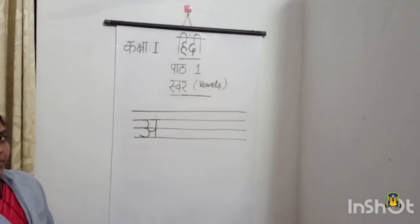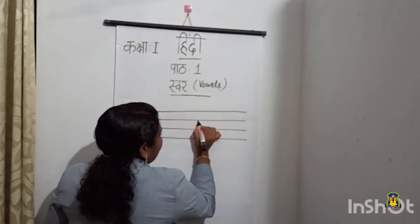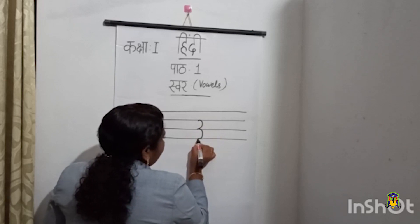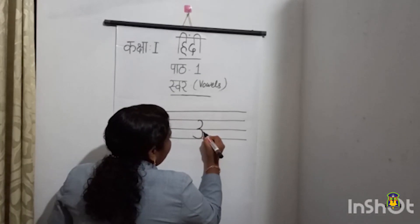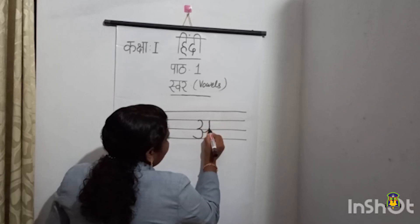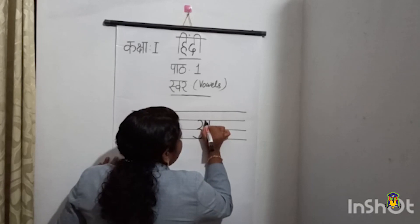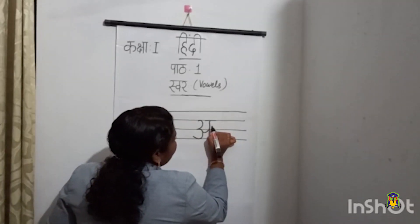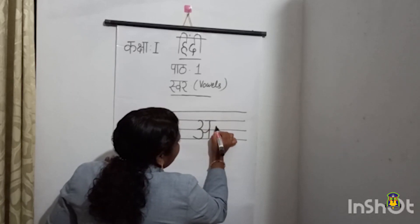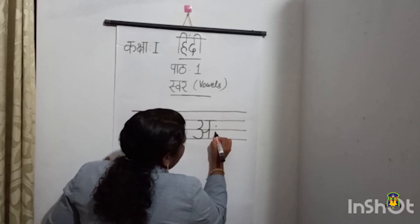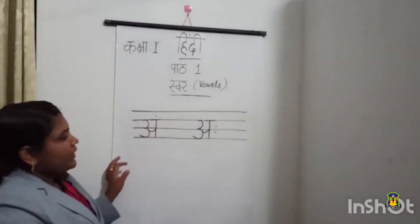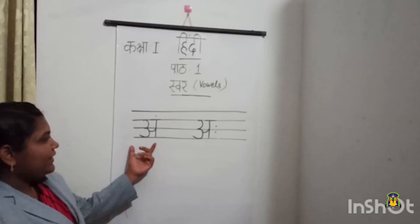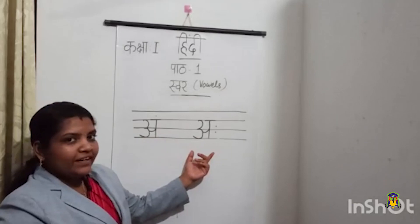Next we are going to write the letter A. Keep your pencil on the second line, then write number three, then make a tail. From here draw a baby curve, then from the second line to the fourth line draw a standing line, then draw a sleeping line on top of the second line. Then near the second standing line, mark the symbol — two dots. That is letter A.